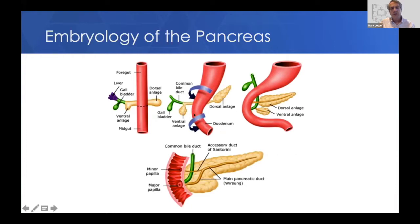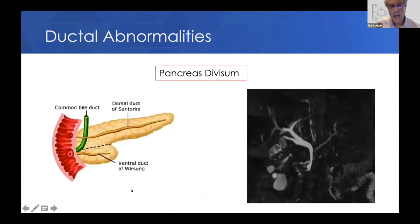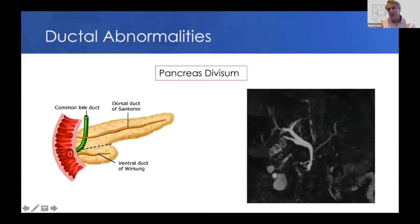When things go awry in this process, it can lead to some ductal abnormalities. The first is pancreas divisum, which is seen in up to 7% of patients. That's when the two ducts fail to fuse, and the dorsal duct continues to drain from the minor papilla, and the ventral duct drains through the normal papilla. This is shown on an MRCP as a crossing sign, where the pancreatic duct crosses over the common bile duct. Whether pancreas divisum is a true disease is controversial, but it seems to be increased in kids who have chronic pancreatitis.